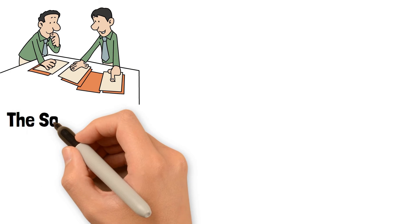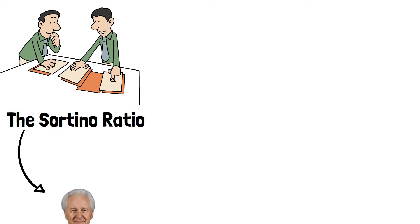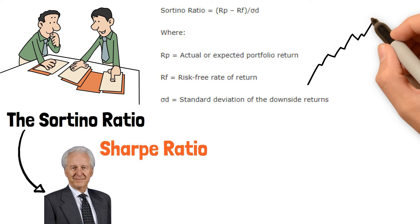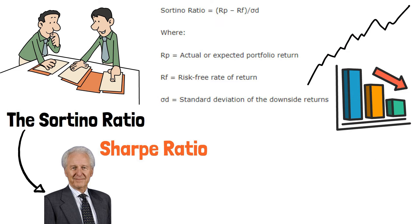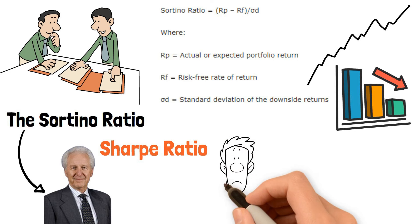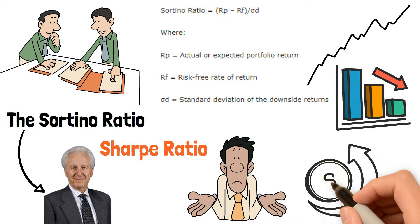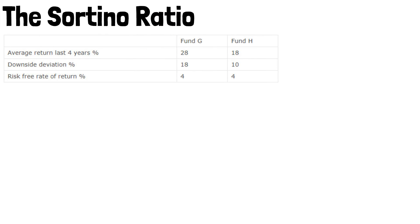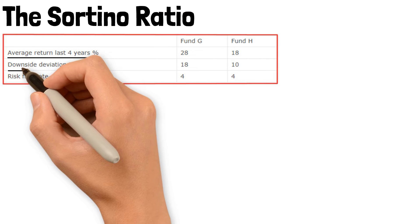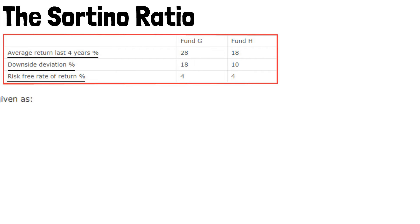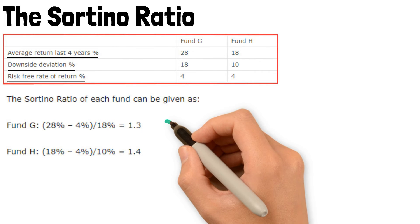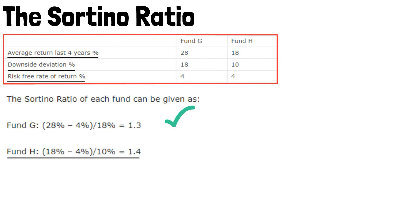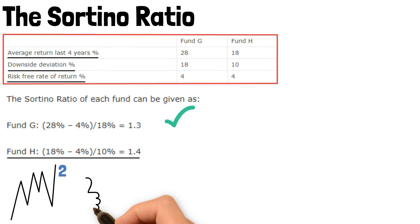Another risk-and-return ratio that's gained popularity is the Sortino Ratio. It was developed by Frank Sortino and is considered a variation of the Sharpe Ratio. While the Sharpe Ratio penalizes all kinds of volatility, the Sortino Ratio penalizes only volatility of negative returns. This makes sense because humans tend to react emotionally more negatively to losses than positively to corresponding gains. To calculate the Sortino Ratio, we need three variables: average returns, downside risk, and the risk-free rate of return. In our example comparing two mutual funds, Fund H is better because it returns more per unit of downside risk taken. As a rule of thumb, a Sortino Ratio above 2 is considered very good.